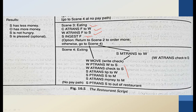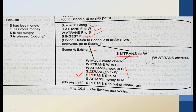Scene four is 'exiting.' W M-move, W P-trans W to S — the waiter moves to the customer. W A-trans check to S — the waiter gives the check to the customer. S A-trans tip to W — the customer gives a tip to the waiter. S P-trans S to M — the customer moves to the manager. S P-trans money to M — he gives the money to the manager. S P-trans out of restaurant — he goes outside. If money is available, S M-trans money to W, and W trans check to S as exiting conditions.